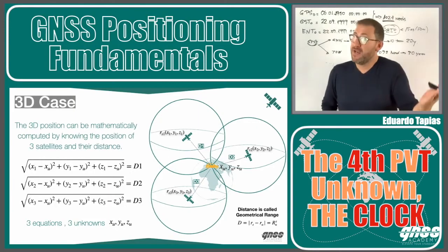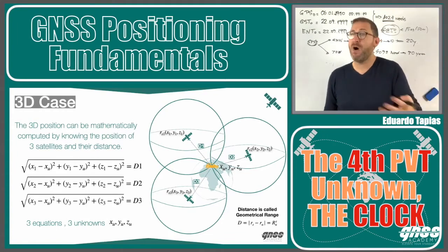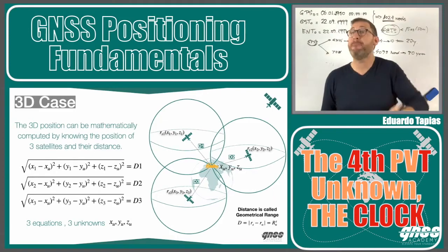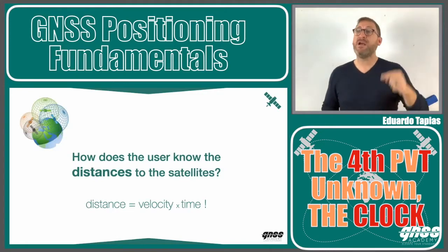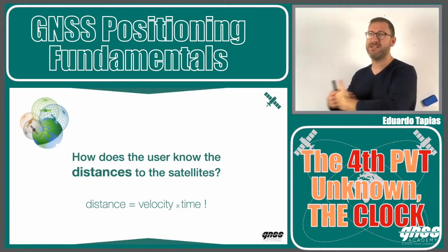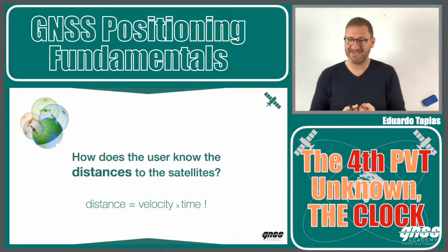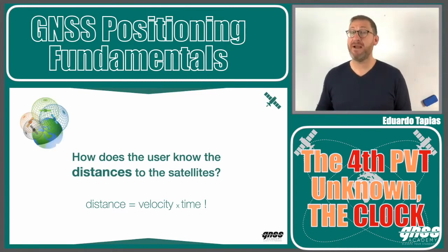We will have three equations with three unknowns. I need to know the distance to the satellites and also the positions of the satellites — that's the information I need in order to solve this equation system. The receiver is the one in charge of estimating the distance to the satellite. The distance is not given to the receiver; the receiver needs to estimate the distance. The distance to the satellite will be velocity multiplied by time.